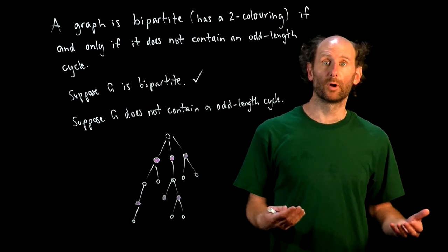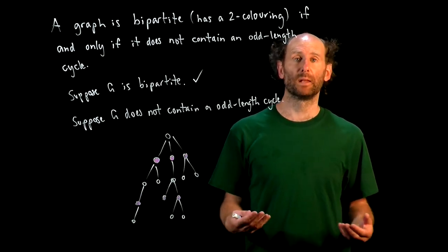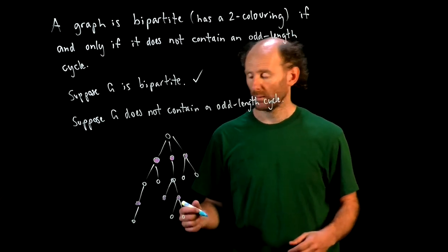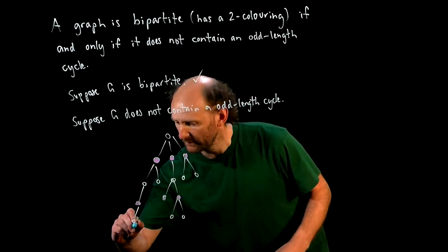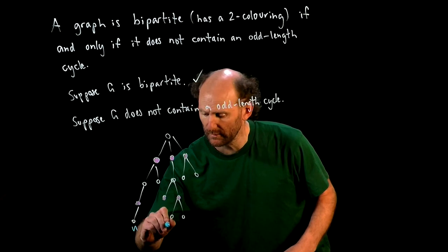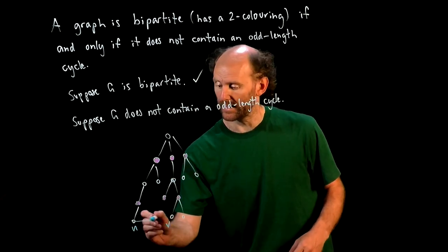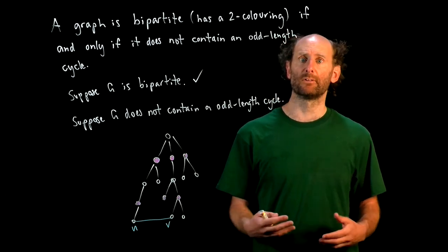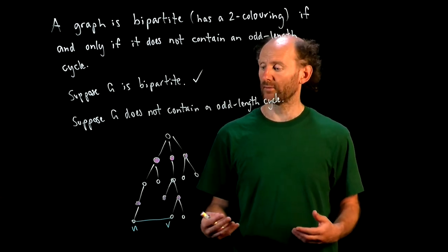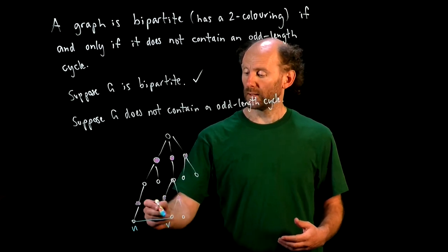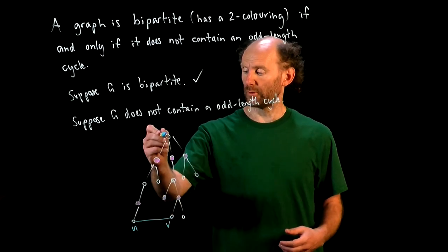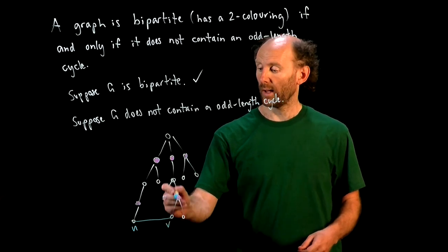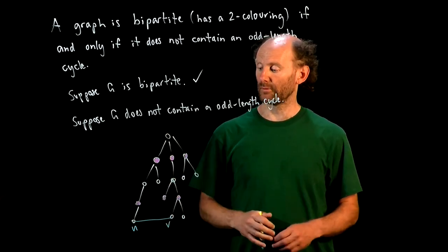Or they'll go between vertices on the same level. But suppose we had vertices U and V, which were on the same level, say these ones, U here and V here, and they were connected by an edge. Well, it turns out that that would create an odd-length cycle. And where does that cycle go? Well, here it goes from the root of the tree down to U, across to V, and back up to the root of the tree.